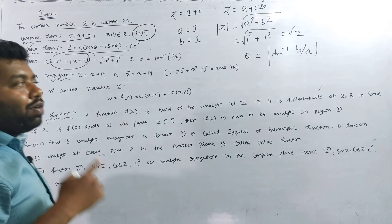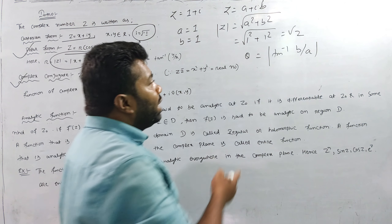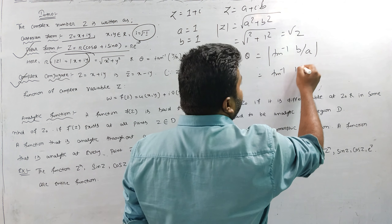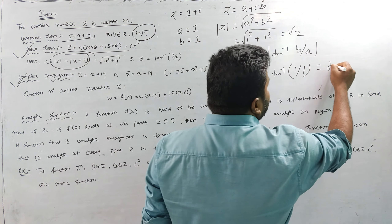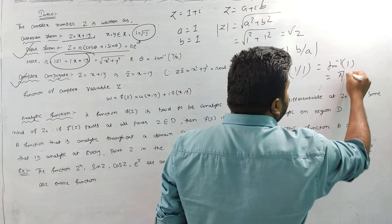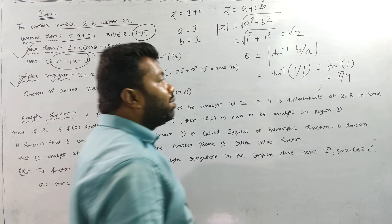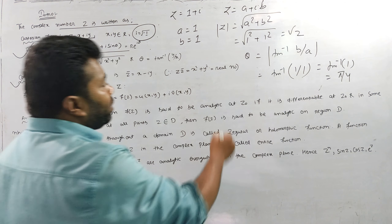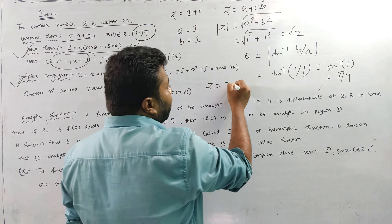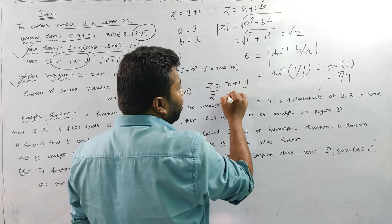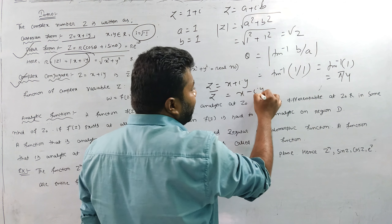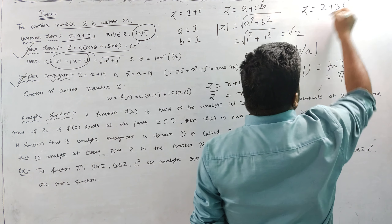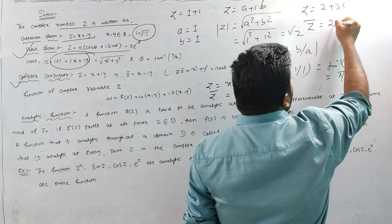θ depends on the quadrant. So θ equals tan⁻¹(B/A), which is tan⁻¹(1/1), which is tan⁻¹(1), so θ equals π/4. To calculate the conjugate: when Z equals X plus iY, the conjugate Z̄ equals X minus iY. For example, if Z equals 2 plus 3i, then Z̄ equals 2 minus 3i.